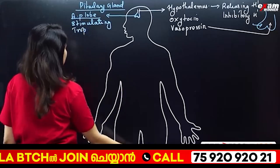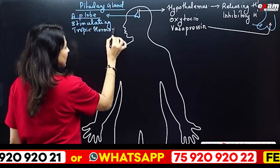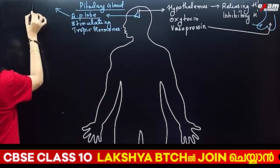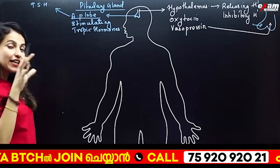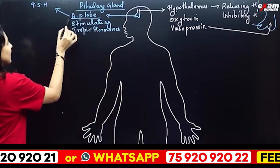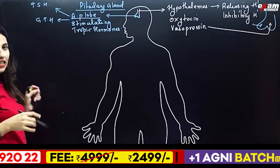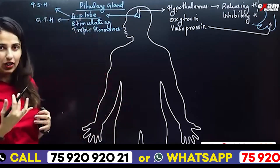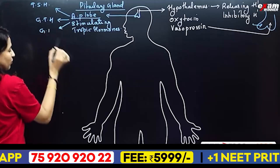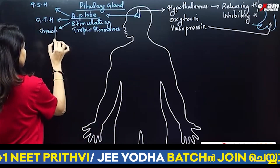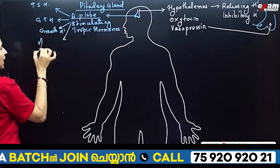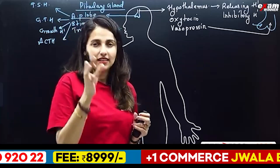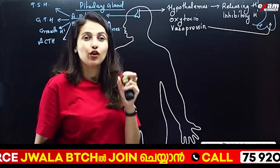These are called trophic hormones. Looking at the anterior lobe of pituitary hormones: first, the Gonadotropic Hormone, which stimulates gonads in males — testes — and in females — ovaries. Then the Growth Hormone. Then we have the hormone that stimulates the adrenal cortex, called the Adrenocorticotropic Hormone (ACTH).